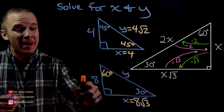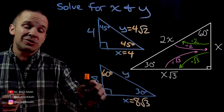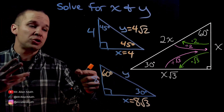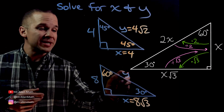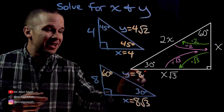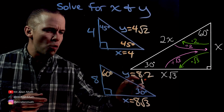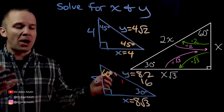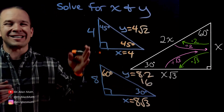I know that my hypotenuse is two times larger than my short side. What's eight times two? That's 16. We have them all — that's dope.